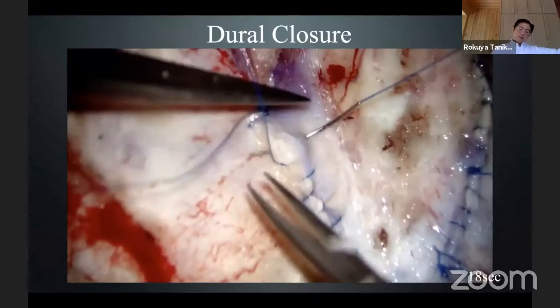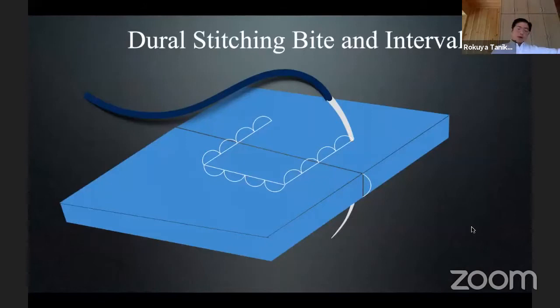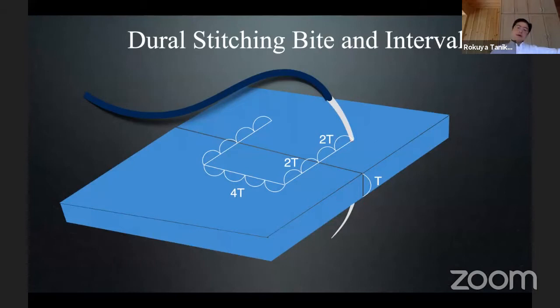With 5-0 Prolene, I force my young residents to do this exactly. This is the principal dimension of dural stitching: if the dural thickness is key, the appropriate bite of the dural stitching should be twice the wall thickness, and the interval of stitching should be four times the wall thickness. This is the principle to achieve watertight dural closure.